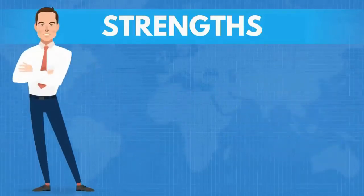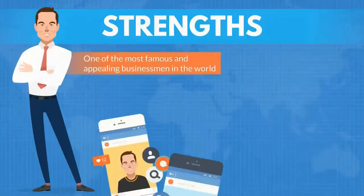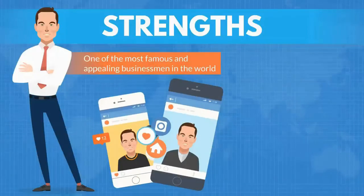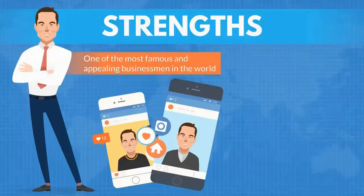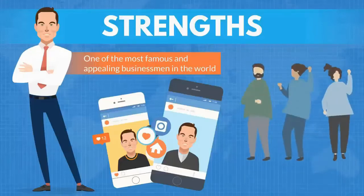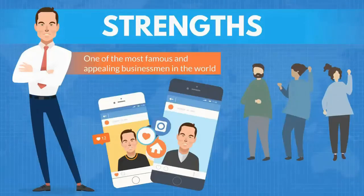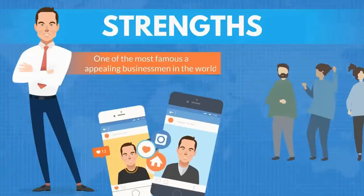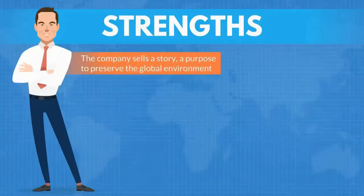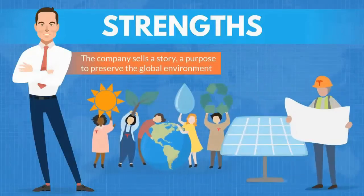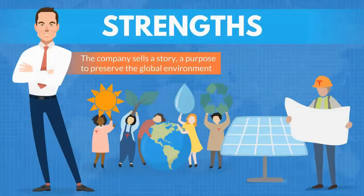Elon Musk — Tesla's notorious CEO and major shareholder — is one of the most famous and appealing businessmen in the world. His ability to tell a story and engage the public is unmatched. By doing this, he wins over many people who actively follow his businesses and will likely become customers. Such customers can be very loyal if handled correctly, which is priceless in the long run. Tesla is attractive to people because it doesn't simply sell cars — the company sells a story: the story of an organization with an ideal purpose to preserve the global environment. This is probably Tesla's most valuable strength.